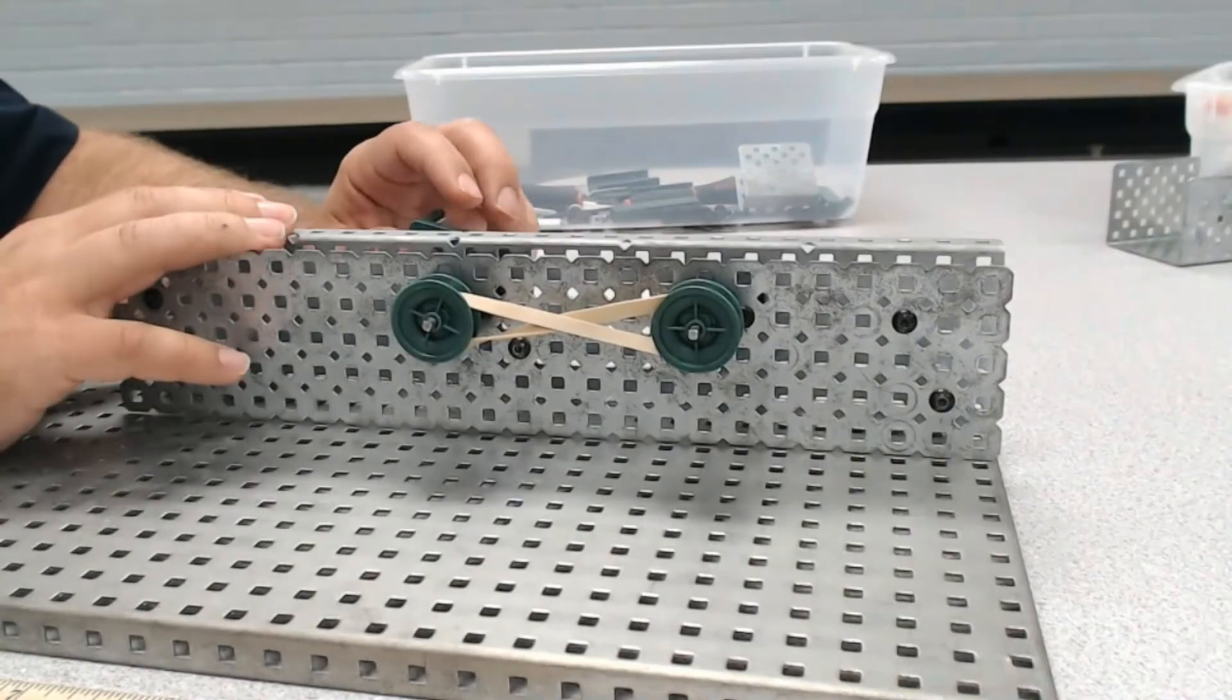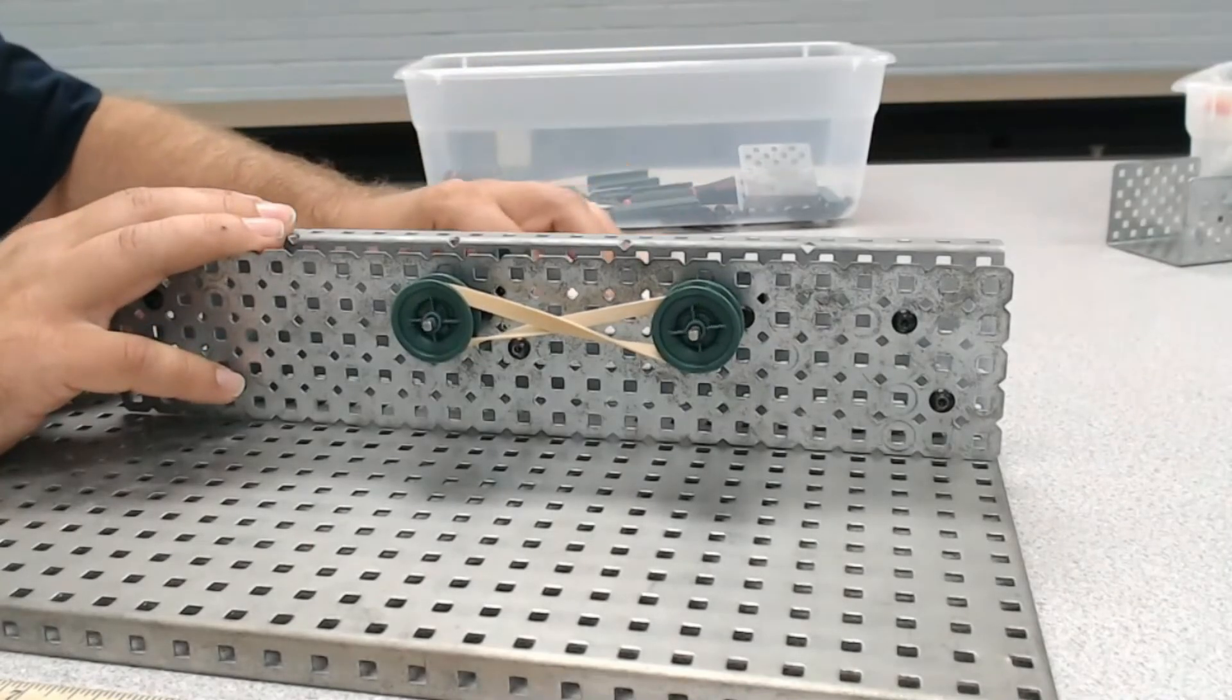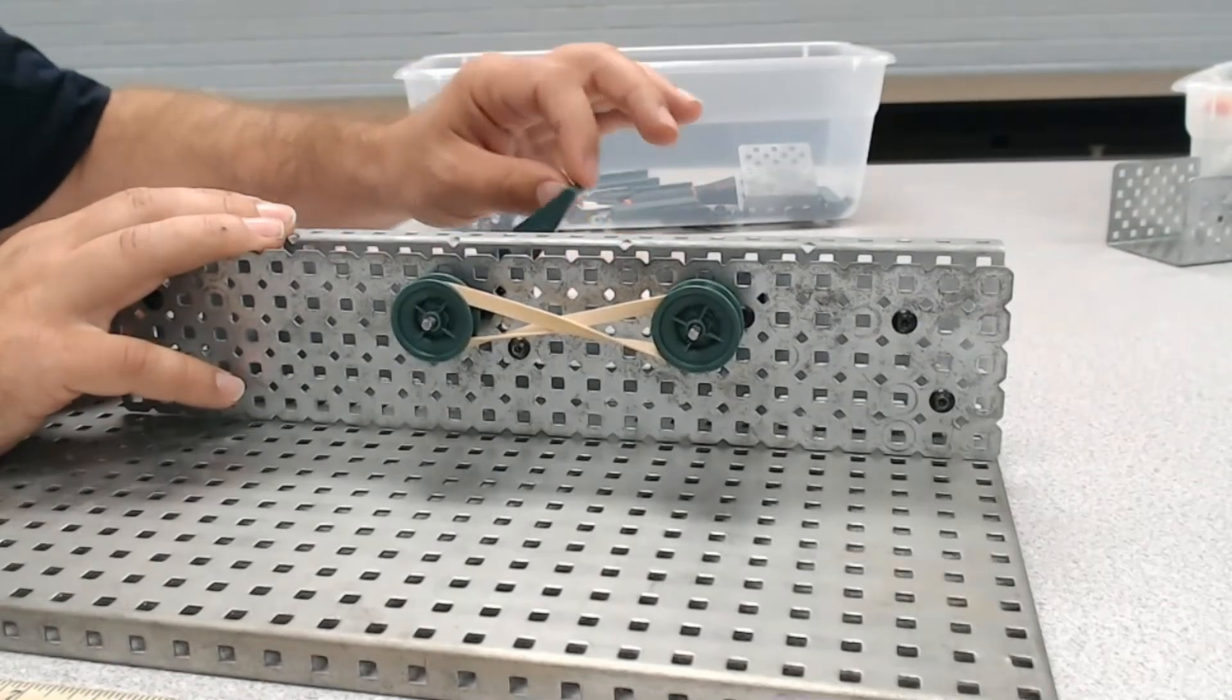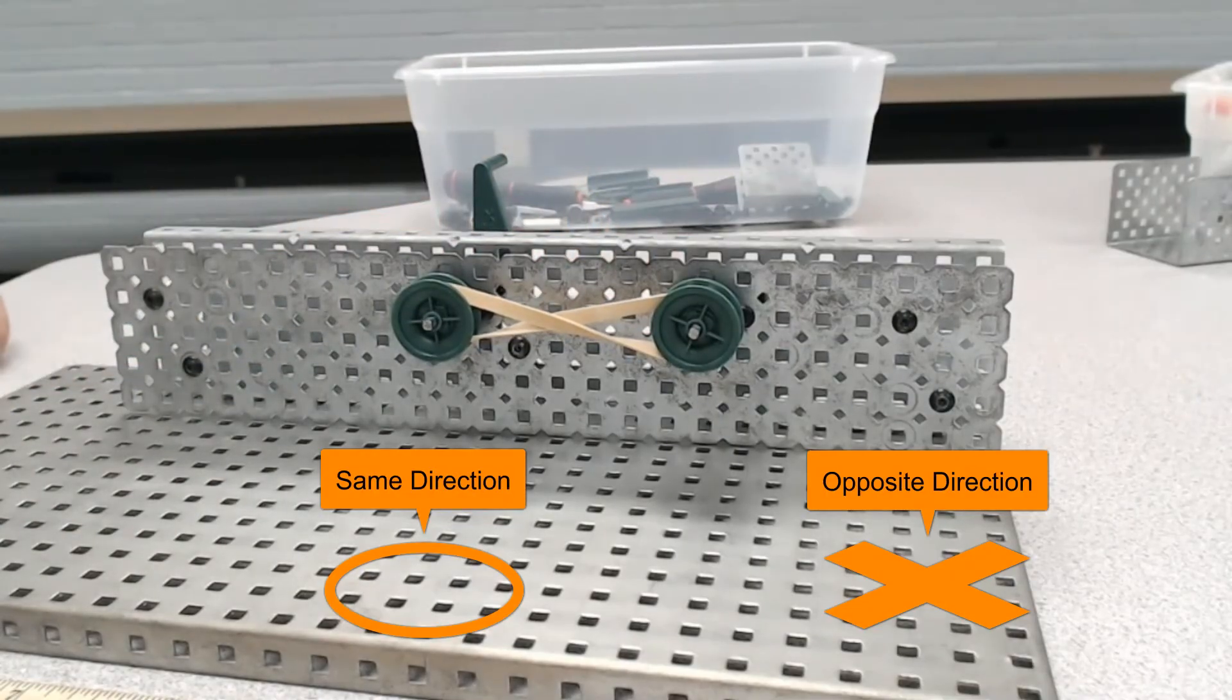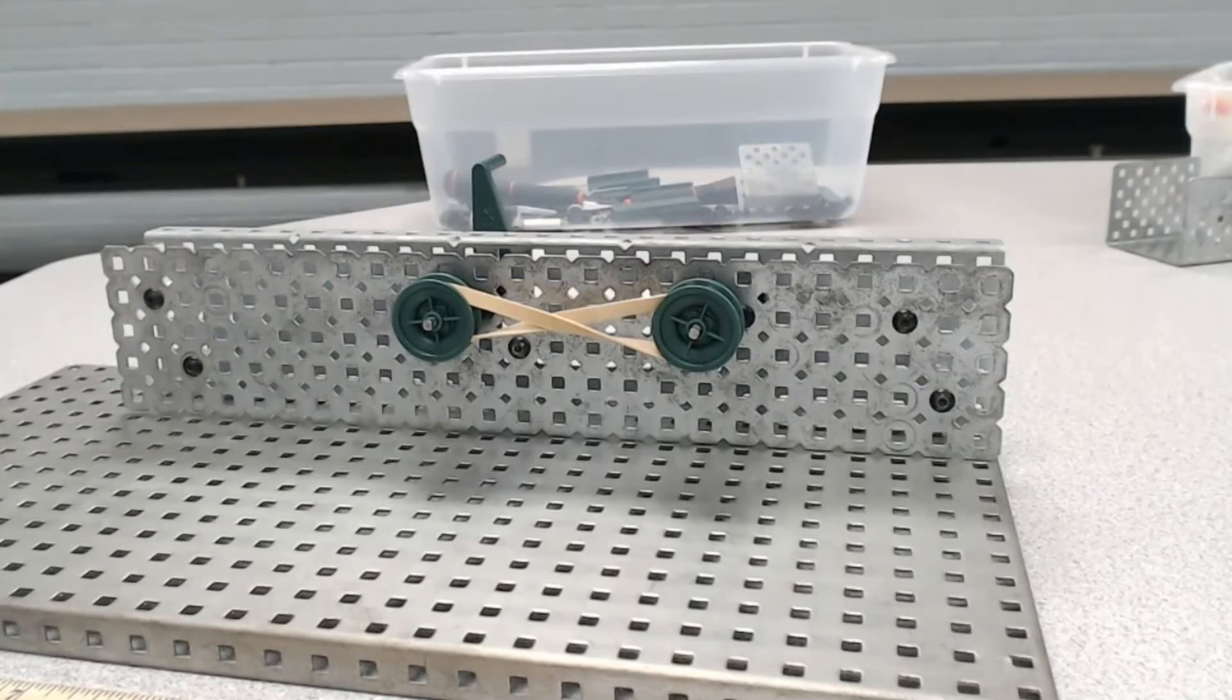When I do that, look what happens to the direction of the input and output gears. Now we see they actually turn in opposite directions. That makes the belt drive a useful gear if you ever need to vary the gear direction in some way. So if you need that ability to change from one direction to the opposite direction, then the belt drive is a useful gear system to consider implementing.